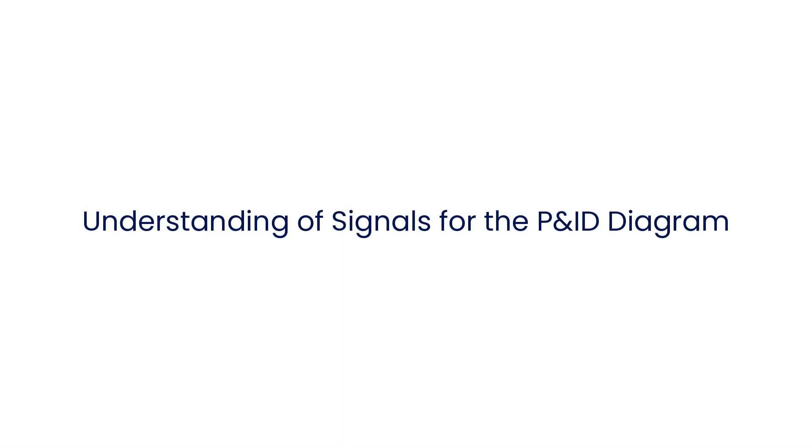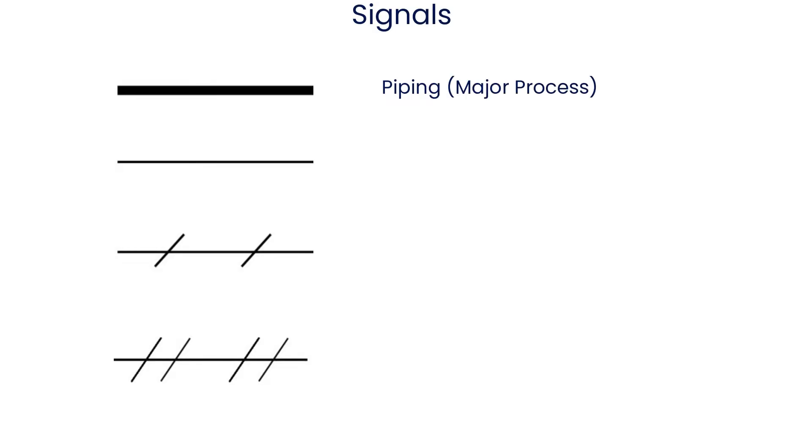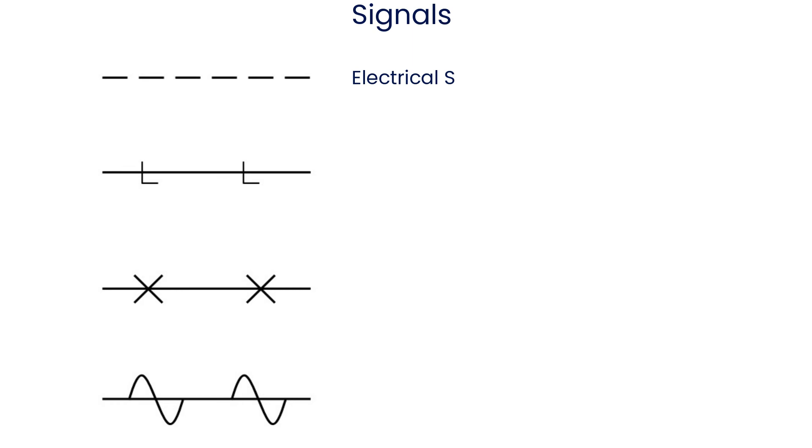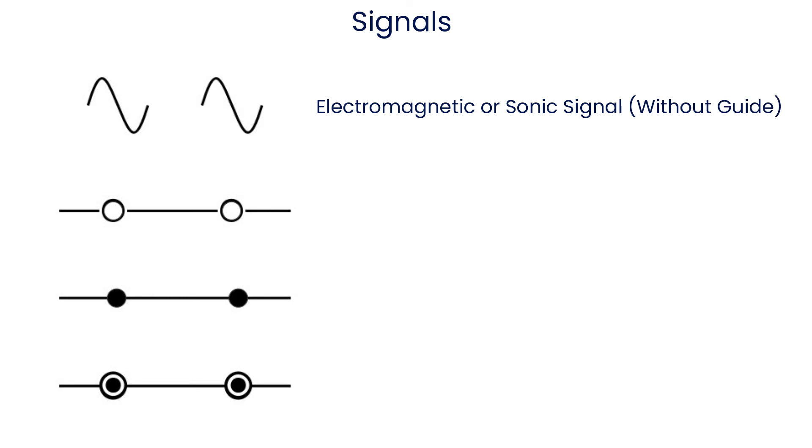Let's see signal symbols that are commonly used in the P&ID diagram. Piping, it is used for major process line. Piping, it is used for minor process line. Piping, undefined signal, pneumatic signal, electrical signal, hydraulic signal, capillary tube, electromagnetic signal, electromagnetic signal without guide, internal system link that is used for software or data link, mechanical link.